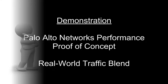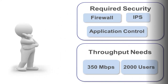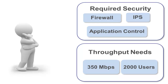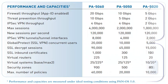When you're ready to buy a security appliance, how do you find the appliance that meets your requirements? You know your security requirements for firewall, IPS, and application control, and you also know your typical throughput. How do you size the appliance to match your requirements and pick an appliance that will handle your current and future needs?